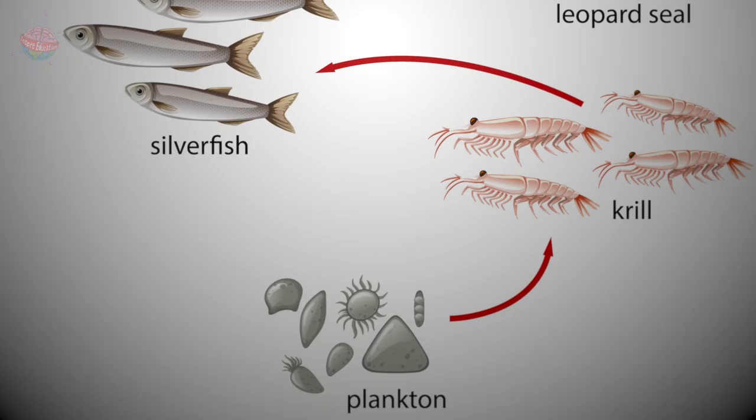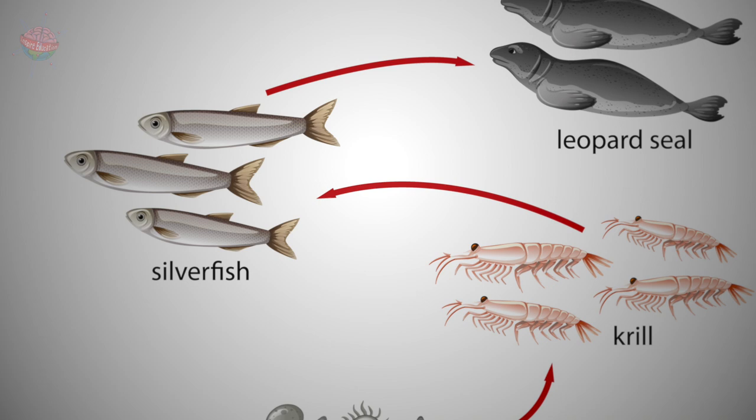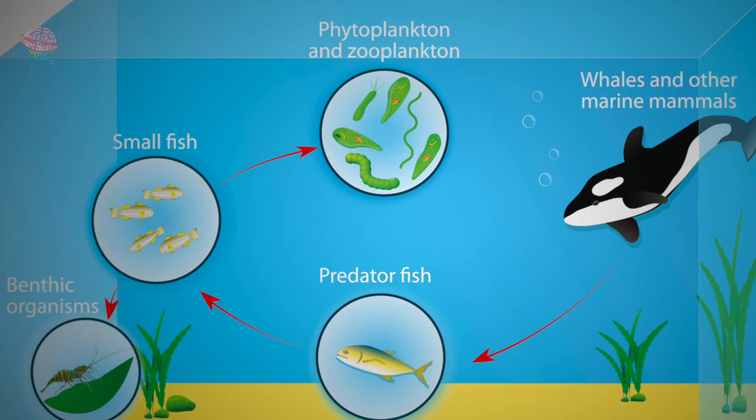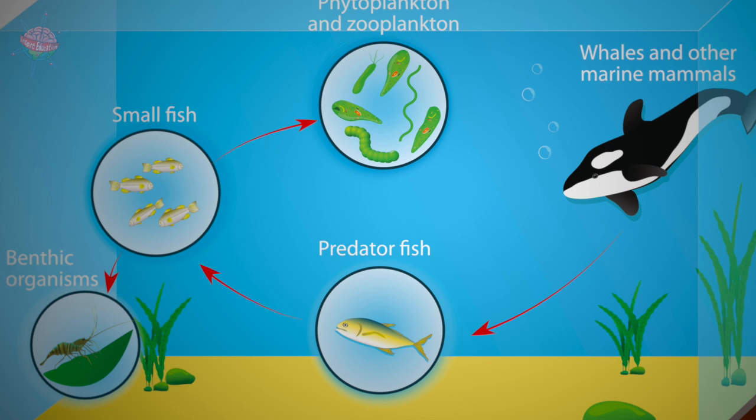Food webs show the flow of energy in an ecosystem — in other words, they show what eats what. Each food web contains lots of different food chains. In the ocean, most food chains have at least four levels.